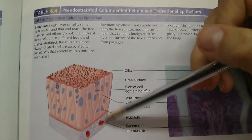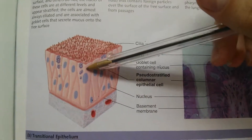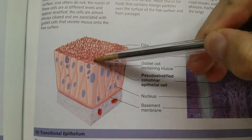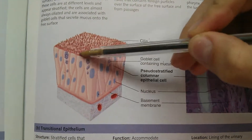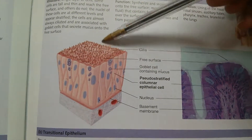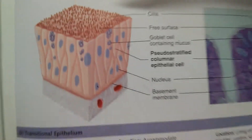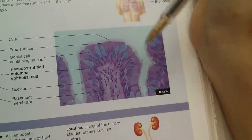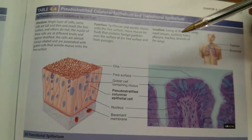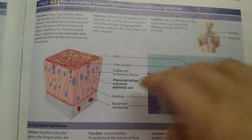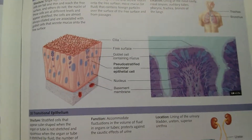The pseudostratified columnar epithelium looks like it's stratified because it appears to have multiple layers, but it's really not — it's all just one column with no additional group sitting on top. These cells have cilia, little hair-like particles that come off the top. You'll find them in the lungs and respiratory tract — the trachea, bronchioles, and so on — because the cilia flush mucus out and help you cough it out so you don't get infections or pneumonia.